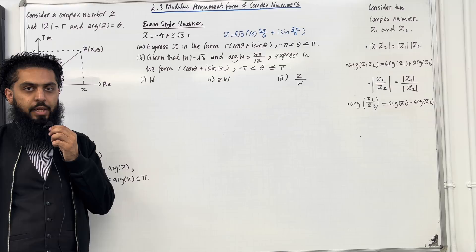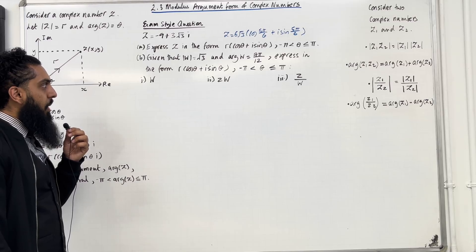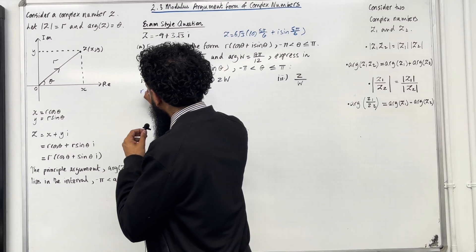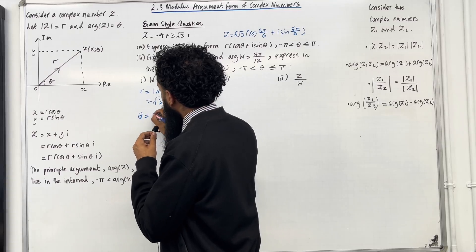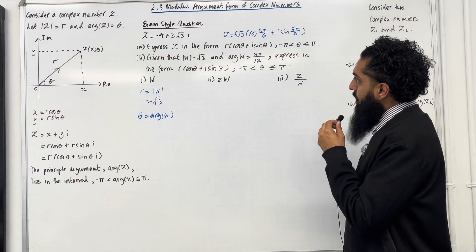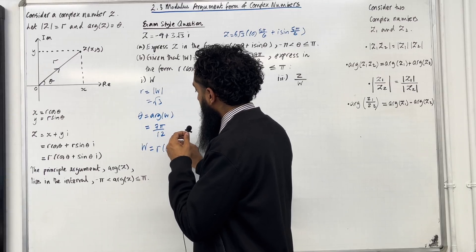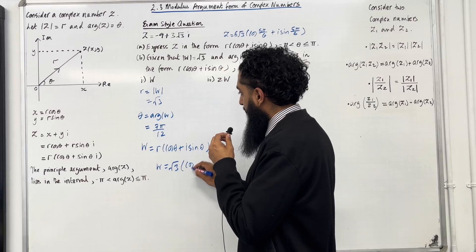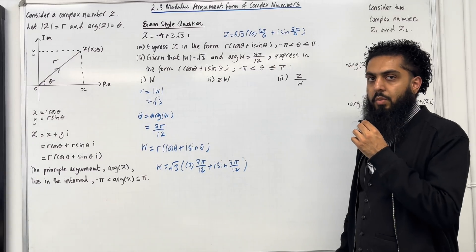Moving on to part B, part 1. Given that |w| = √3 and arg w = 7π/12, express w in the form r(cos θ + i sin θ) where −π < θ ≤ π. Let r = |w| = √3 and θ = arg w = 7π/12. So w = √3 (cos(7π/12) + i sin(7π/12)). This completes part B, part 1.